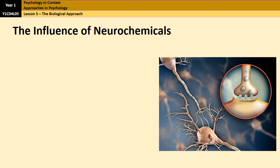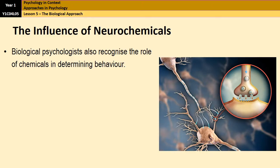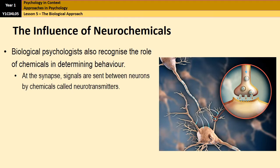Moving on, we're now going to come to neurochemicals. For those who haven't yet looked at the biopsychology parts of psychology, there is a video on that as well. For now, I'll give you the basics. Biological psychologists also recognise the role of chemicals in determining behaviour. In between two neurons, you've got a gap called the synapse, and at the synapse, impulses are sent between neurons by chemicals called neurotransmitters.